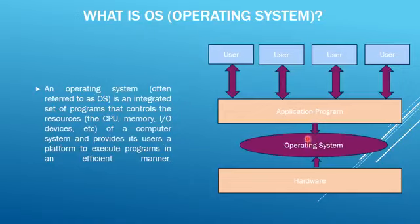This picture shows that the operating system is acting as a communication bridge between the user and the hardware. The operating system provides a platform on which a user can execute programs in a convenient and efficient manner. It is the first program of your computer. You load other software on your operating system, creating layers of software on your computer. Without an operating system, a computer is useless.